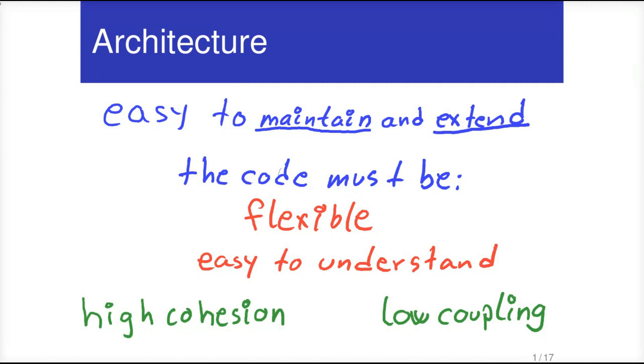And by reaching these goals, we will make the code flexible and easy to understand, and when the code is flexible and easy to understand, it will be easy to maintain and extend. So architecture is a much bigger topic than this, but that's all we are concerned with right now. So now let's see how good architecture can help us reach these goals.